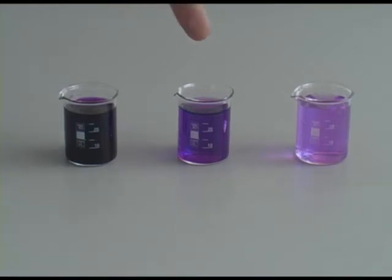The beaker in the middle contains one part squash diluted with six parts water. This is about the correct dilution for drinking. The beaker on the end, as you can see by looking at it, is very dilute. Here we've added 15 parts water to one part squash, and you probably wouldn't enjoy drinking this very much.